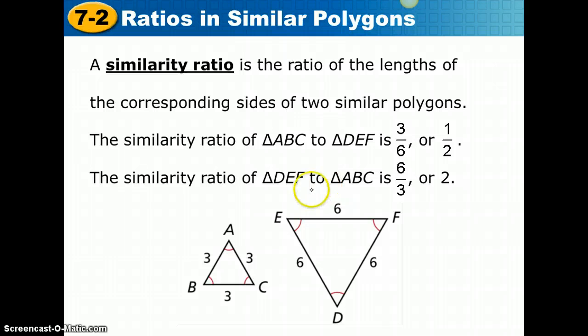But if I change the order to the similarity ratio of DEF to ABC, we say that ratio is 6 to 3, or 2. The order in which you label your figures determines the order in which you label your ratio.